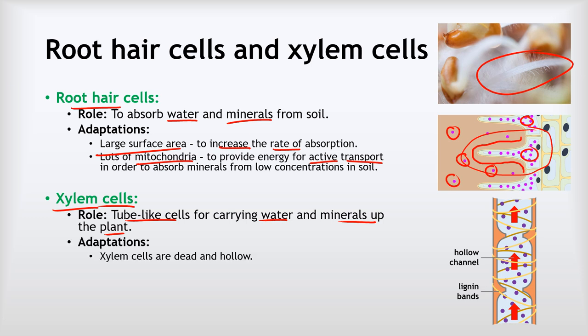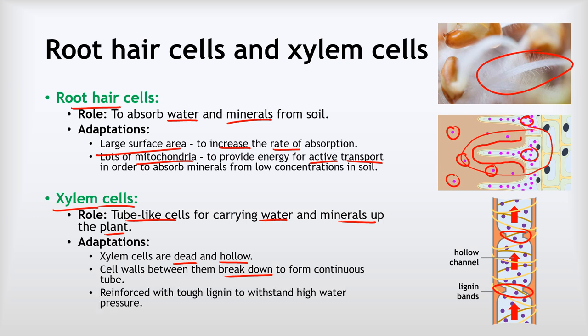In terms of adaptations, xylem cells have a few. Firstly, they are dead and they are hollow, which gives them more volume to carry water - their only job is to carry the water and the minerals. The second adaptation is that the cell walls between them break down to form a continuous tube, creating a continuous channel so that water and mineral ions can flow freely. Lastly, the cells are reinforced with tough bands of lignin - those circular bands you can see - which helps the xylem cells withstand the high water pressure of all that water inside the plant.